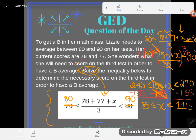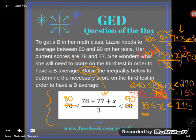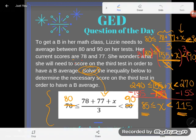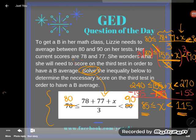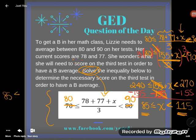So what will she need to score on the third test in order to have a B average? Well, it looks like she needs to score between 85 and 115 points. I don't know, there must be some serious extra credit on that test, but somewhere between 85 and 115. This is done. That is the solution. The score that she gets, the X, should be somewhere between 85 and 115.